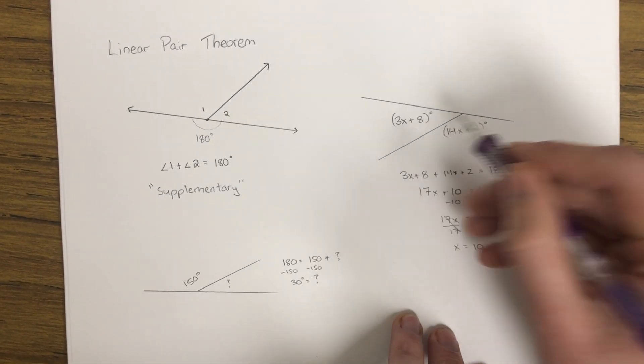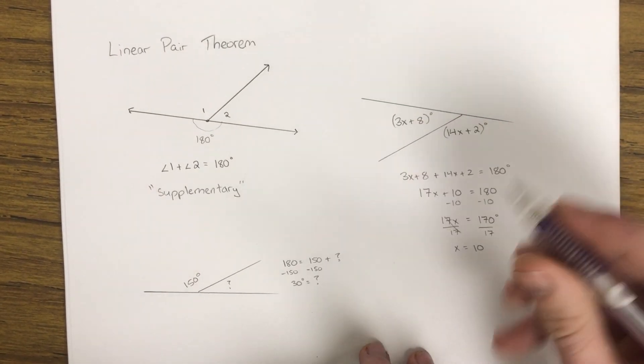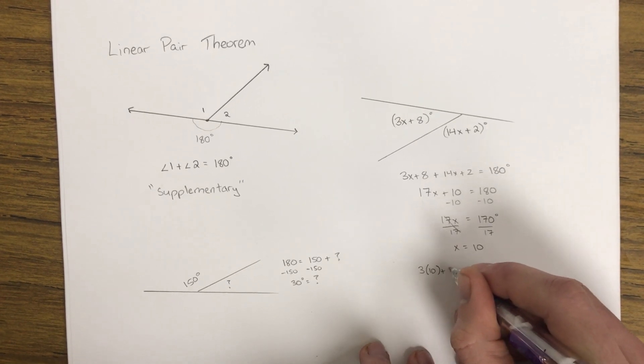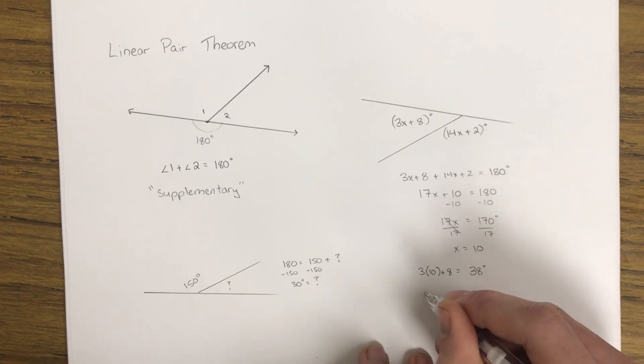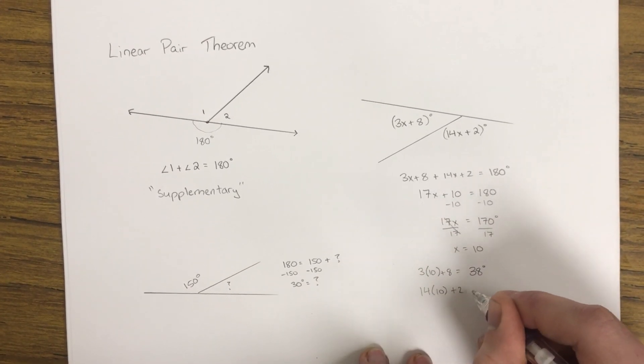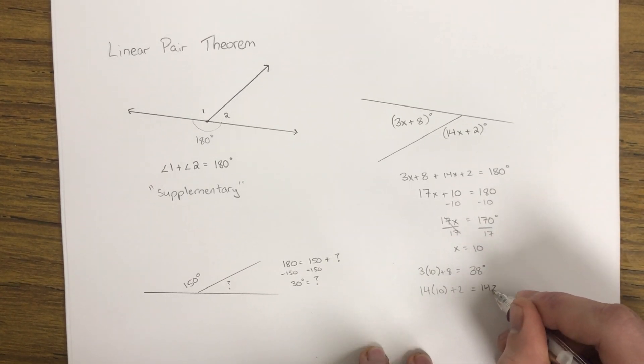And then usually you'll be asked to go back and figure out what the value of the angles is. So substituting back in, 3 times 10 plus 8 is 38 degrees. And 14 times 10 plus 2, 14 times 10 is 140 plus 2, so that would be 142 degrees.